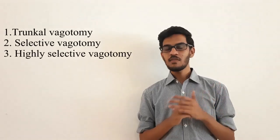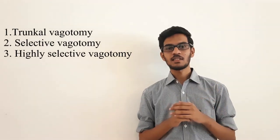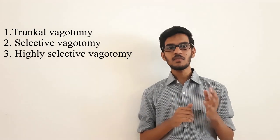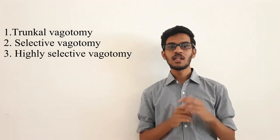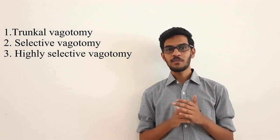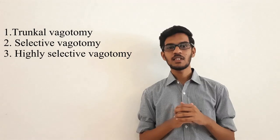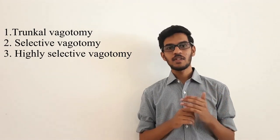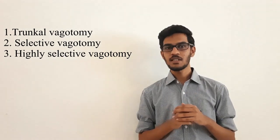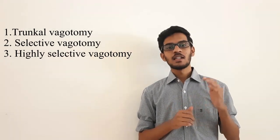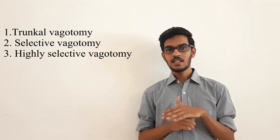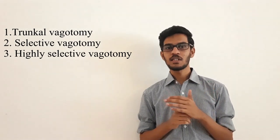Vagotomy is a clinical procedure to reduce the gastric secretions. There are three types of vagotomy. First one is truncal vagotomy. Here the vagal trunks are cut at the level of the lower esophagus. Second method is selective vagotomy. Here the anterior and posterior vagal trunks are cut after giving the hepatic branch and celiac branch. In these two methods, we can reduce the gastric secretion but gastric stasis may occur due to the impaired nerve supply to the pyloric sphincter.